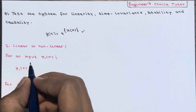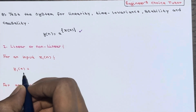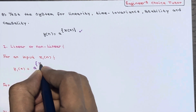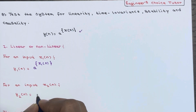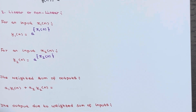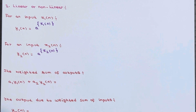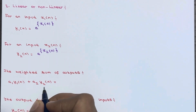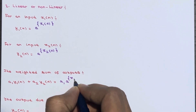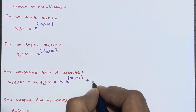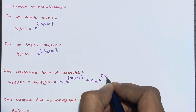For an input x1(n), the output y1(n) = a^x1(n). For an input x2(n), y2(n) = a^x2(n). Now we have to calculate the weighted sum of outputs, which means a1·y1(n) + a2·y2(n). Since y1(n) and y2(n) are already calculated, this becomes a1·a^x1(n) + a2·a^x2(n).